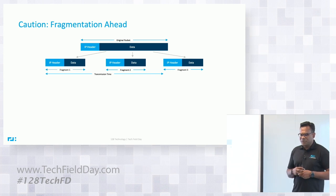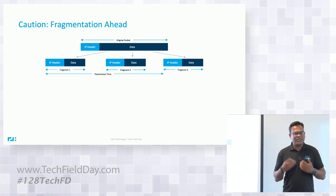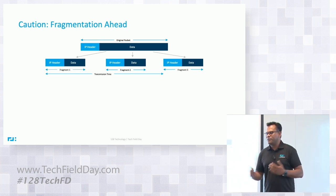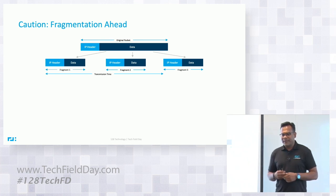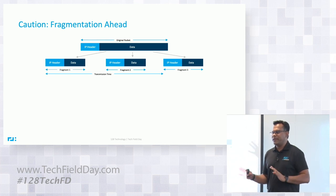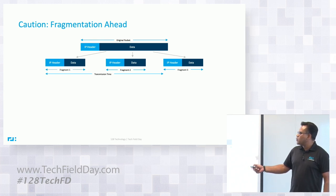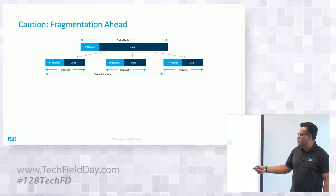Fragmentation causes a lot of issues in the network. We already spoke about how we do service-based fragmentation in the fabric — we don't do it in the stream. Because we are not adding overhead, most of the time packets will not be fragmented in our case. With traditional IP packets, you're obviously increasing the transmission time when you fragment packets, because now you have to add IP headers and space them out.